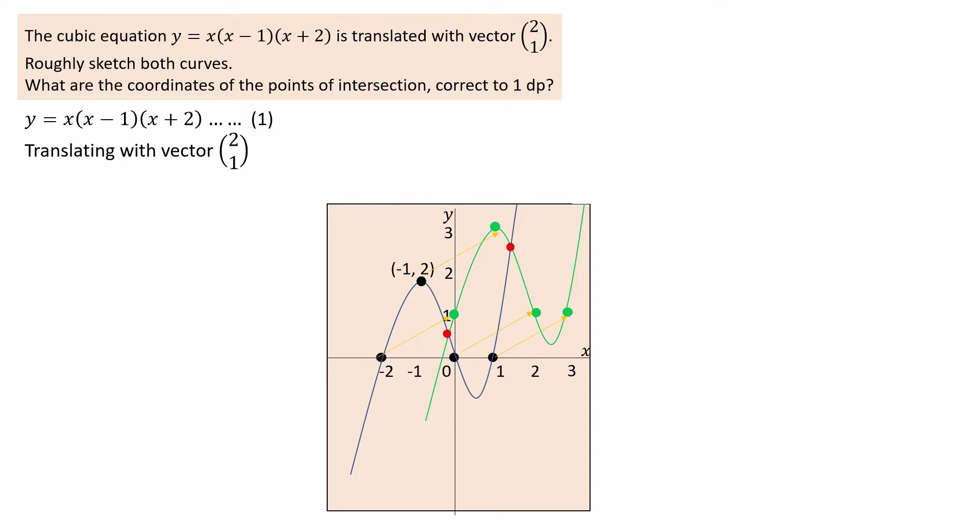There are two points of intersection, shown in red. To find the coordinates of these points to one decimal place, we need to solve two cubic simultaneous equations.